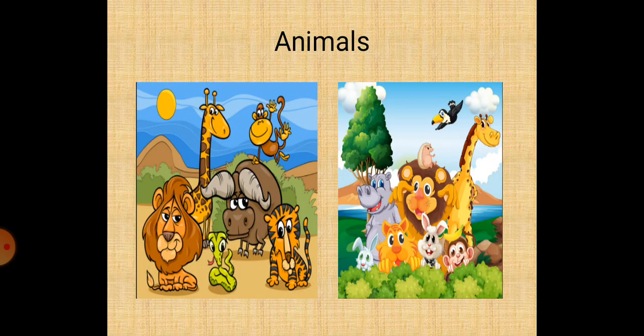All the animals around us have names, so it is a noun. For example, dog, cow, cat — they have a name, so it is a noun. Yes children, look at this: here are some animals. They all have names, so it is a noun.